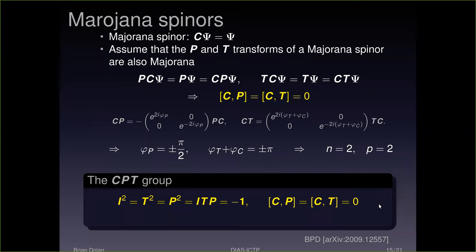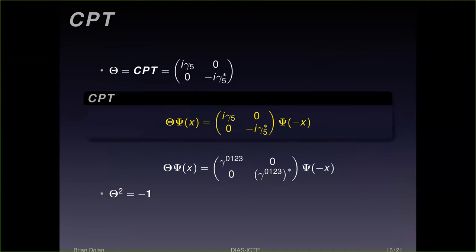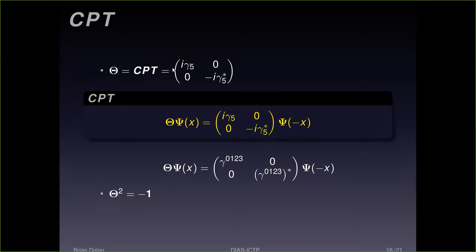That's the main point I want to make about the group structure of these discrete symmetries: we get the quaternion group. For faithful representations, that's the only one you can use. But is there any physics in this? Well, first let me just apply this to CPT. The CPT theorem says that the combination CPT in this formulation is just matrix multiplication — this is theta — and it has to be plus or minus i in front of gamma-5. Apart from the ambiguity in sign, this is the only possibility: it has to be i-gamma-5.